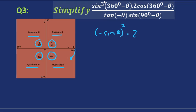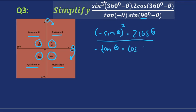For cosine, 360 minus theta is again in the fourth quadrant, and cosine is actually positive in the fourth quadrant, so that is simplified. What about 0 minus theta? Remember, 0 and 360 are at the same position, so 0 minus theta is also going to be in the fourth quadrant, and tangent is negative in the fourth quadrant. And for 90 minus theta, that is in the first quadrant, and all the ratios are positive there. But at 90, sine and cosine are co-ratios, so sine becomes cosine of theta.